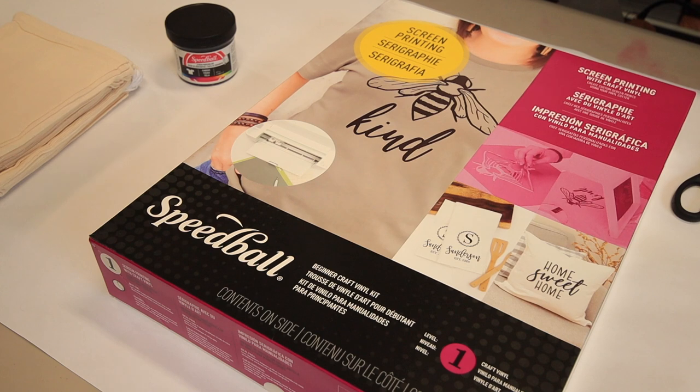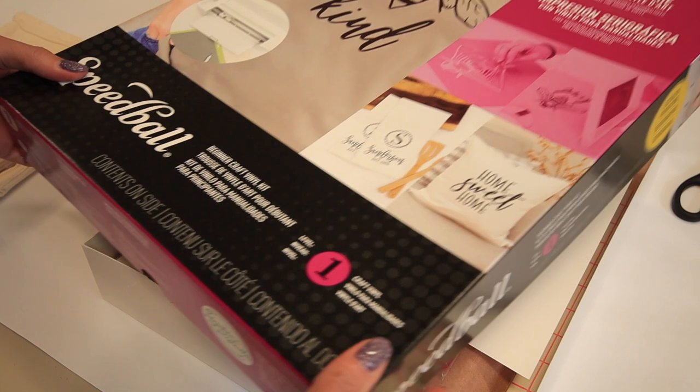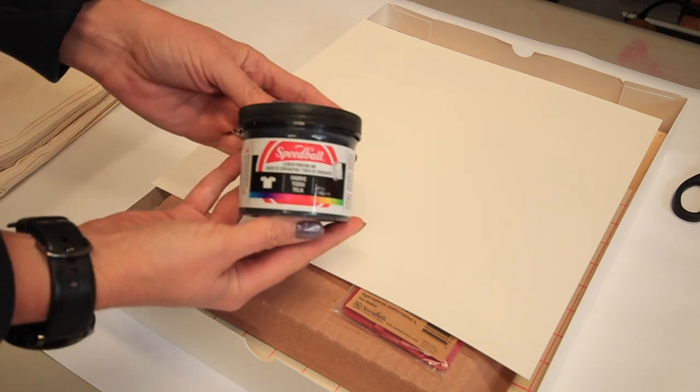Alright, let's get started. So Speedball has this really convenient kit. You can get this on Amazon. I'll list all the information below. It comes with Speedball paint, so this is a paint specifically for fabric.